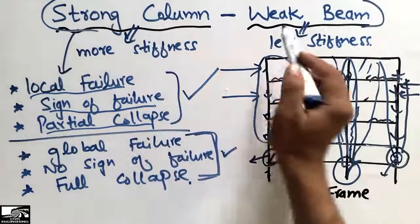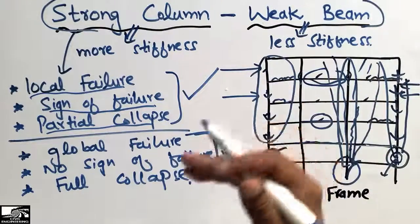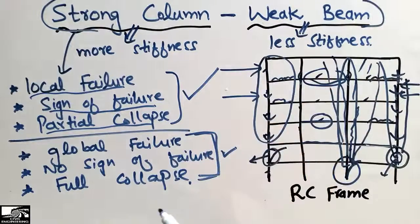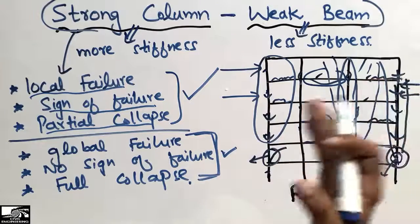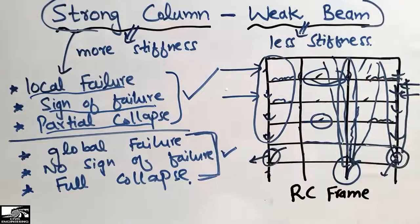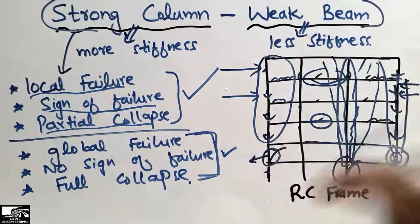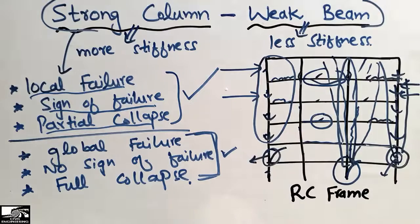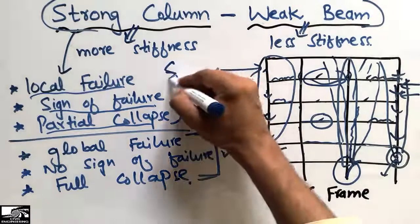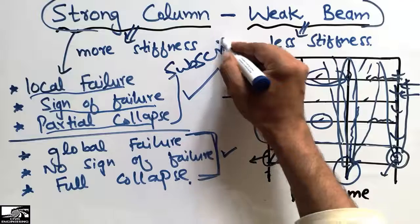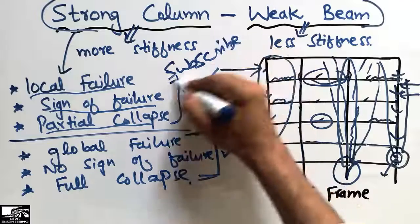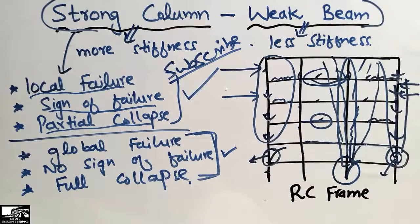That's why we provide the strong column and weak beam concept in earthquake design. This concept is used while designing structures for lateral loads like wind load, water loads, and especially for earthquake design. Hope you understand this concept — please subscribe for daily civil engineering videos. Thank you for watching.